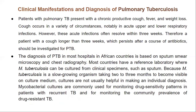Regarding clinical manifestations and diagnosis of pulmonary tuberculosis: patients with TB present with cough, fever, and weight loss, in a variety of circumstances, notably in acute upper and lower respiratory infections. A patient with a cough lasting longer than three weeks — TB should be suspected and antibiotics administered as the case may be. To confirm a tuberculosis case, healthcare workers carry out a variety of tests including blood smear, microscopy, chest radiography, and X-ray. The TB bacteria can also be isolated from a sputum sample — what you cough up — and then cultured and examined. This is a professional procedure.